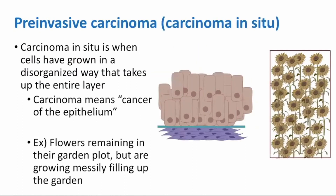Pre-invasive carcinoma, or carcinoma in situ, is the next step. Carcinoma means a cancer of the epithelium. This is when epithelial cells have grown in a disorganized way that takes up the entire layer. You can imagine this as our flowers, or epithelial cells, remaining in their plot but growing messily, and so much that they fill up the garden.